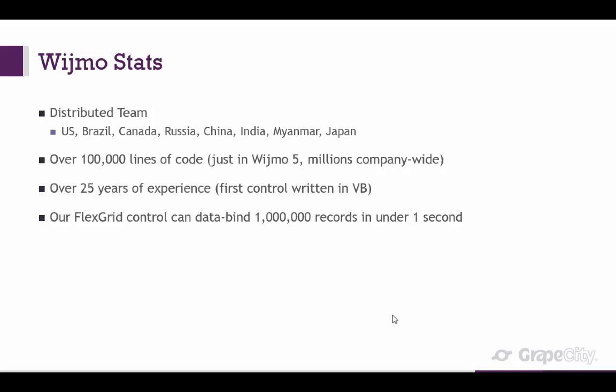We have over 100,000 lines of code in Widgmo 5 — that's not including samples, just our JavaScript code. Company-wide we have millions. We have a lot of products in many different platforms, many in the Microsoft world like .NET, ASP.NET, Silverlight, and WPF. We have a long history of developing grids and charts in all these Microsoft platforms for over 25 years. Our JavaScript FlexGrid control can data-bind a million records in under one second. It's a testament to JavaScript speed today and a really well-engineered JavaScript grid.